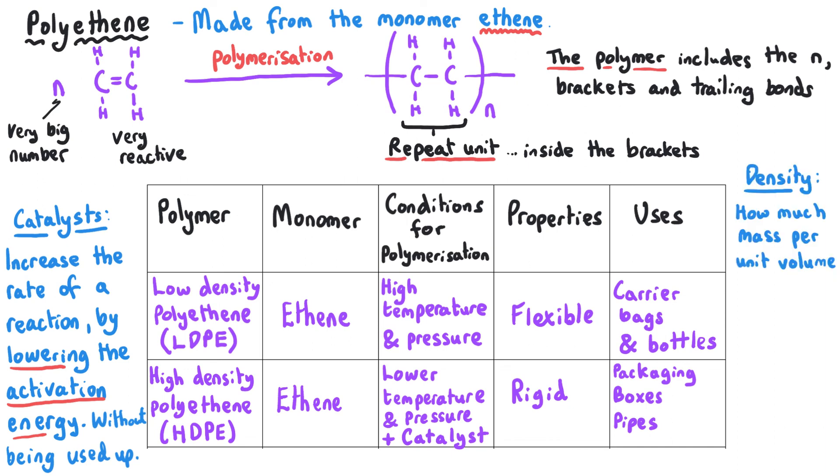And in terms of the polymer chains, low-density and high-density, density is how much matter, how much mass is packed into a particular volume, and so a low-density polymer means that there's probably quite a bit of space between the polymer chains themselves, whereas high-density means that the polymer chains are held closer together.